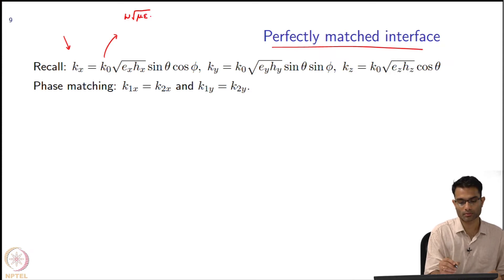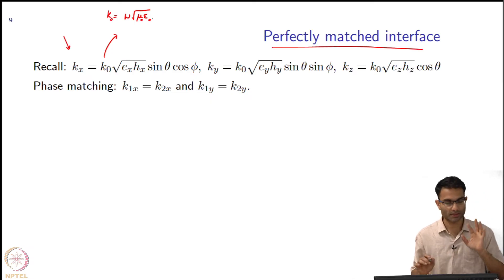This is in general k. So we will just keep this in mind because our two regions have different values of mu_1 and epsilon_1.